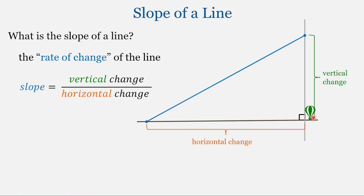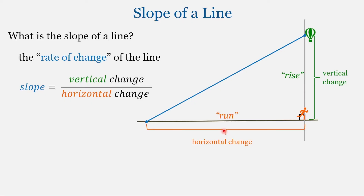Let's look at it another way. When we talk about vertical change, we're talking about how much a line goes up and down — we call this the rise. When we're talking about horizontal change, we are looking at how much the line goes left or right — and we call this the run. So we can define slope as the rise over the run, where the rise is how much the line goes up or down, and the run is how much the line moves right or left.